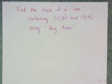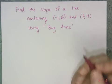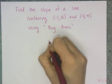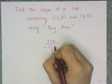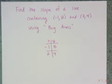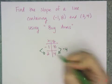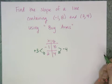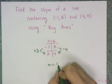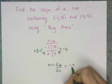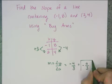We're going to find the slope of a line containing the points negative 1, 8 and 2, 4 using bug arms. I'm given two data points and I'll turn them into a table: negative 1, 8 and then 2, 4. Drawing my bug arms: going from 8 to 4 is a drop of 4, and going from negative 1 to 2 is an increase of 3. So my slope — change in y over change in x — is negative 4 over 3. My slope is negative 4 thirds.